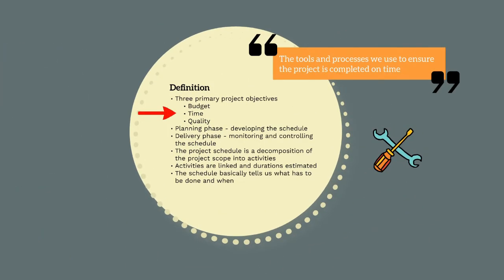When completing a construction project, in addition to the obvious requirements that works must be performed safely and with zero harm, there are three primary outcomes we are striving for. We are aiming to deliver the entire project scope under budget, on time, and to the required quality standard.